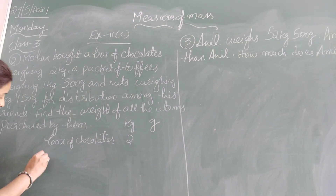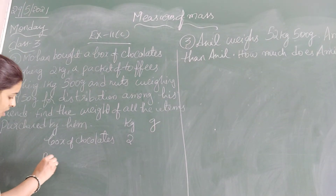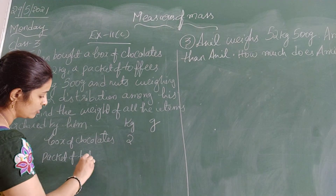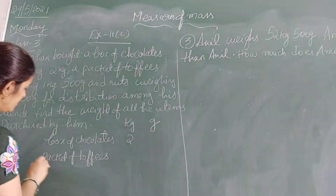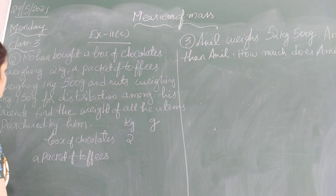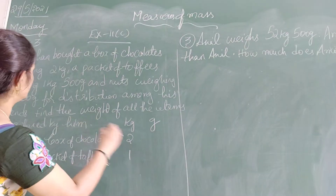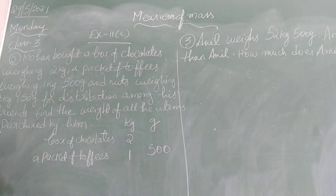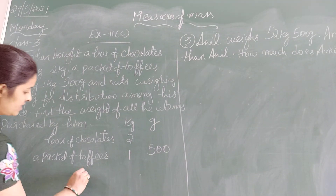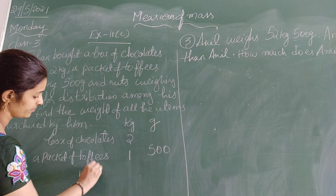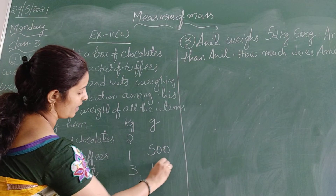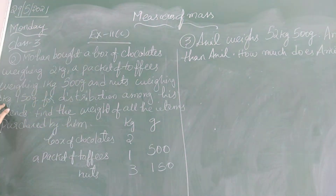A packet of toffees — that is 1 kg 500 grams. And nuts weighing 3 kg 150 grams.